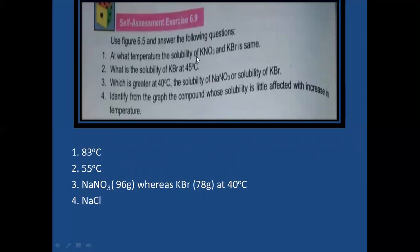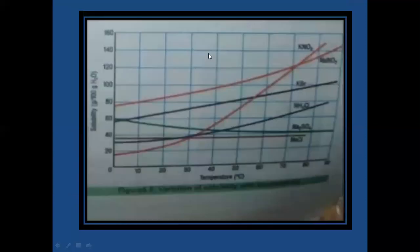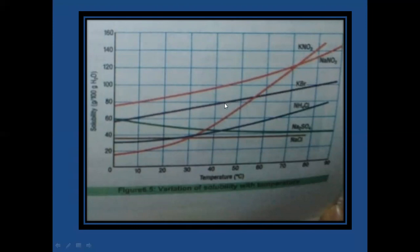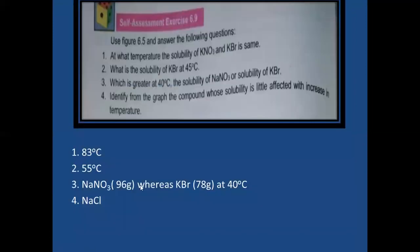Question four: identify the compound whose solubility is little affected by change in temperature. The answer is sodium chloride, whose graph is a straight line showing its solubility is little affected with increasing temperature. So potassium nitrate and potassium bromide have the same solubility at 55°C, sodium nitrate solubility is greater at 40°C, and sodium chloride's solubility is little affected with temperature change.